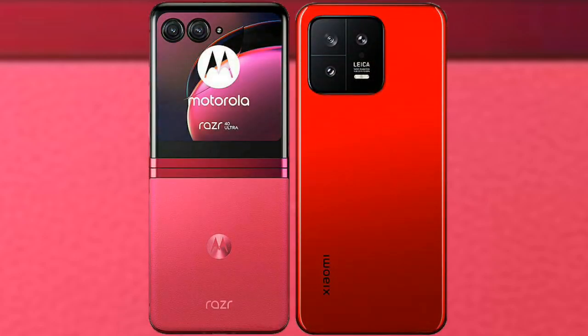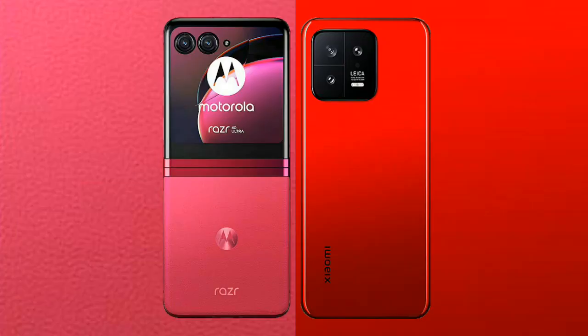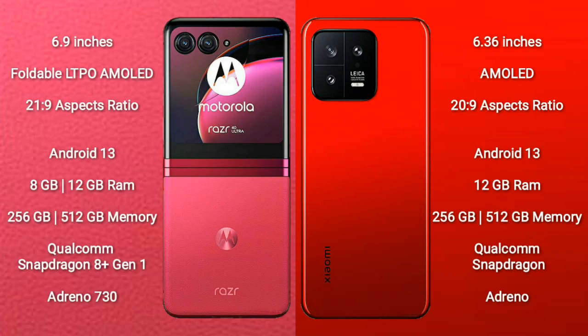I will compare the new Motorola RAZR 40 Ultra with Xiaomi 13T. Motorola RAZR 40 Ultra comes with a 6.9-inch foldable LTPO AMOLED display and aspect ratio 21:9. Xiaomi 13T has a 6.36-inch AMOLED display and aspect ratio 21:9.